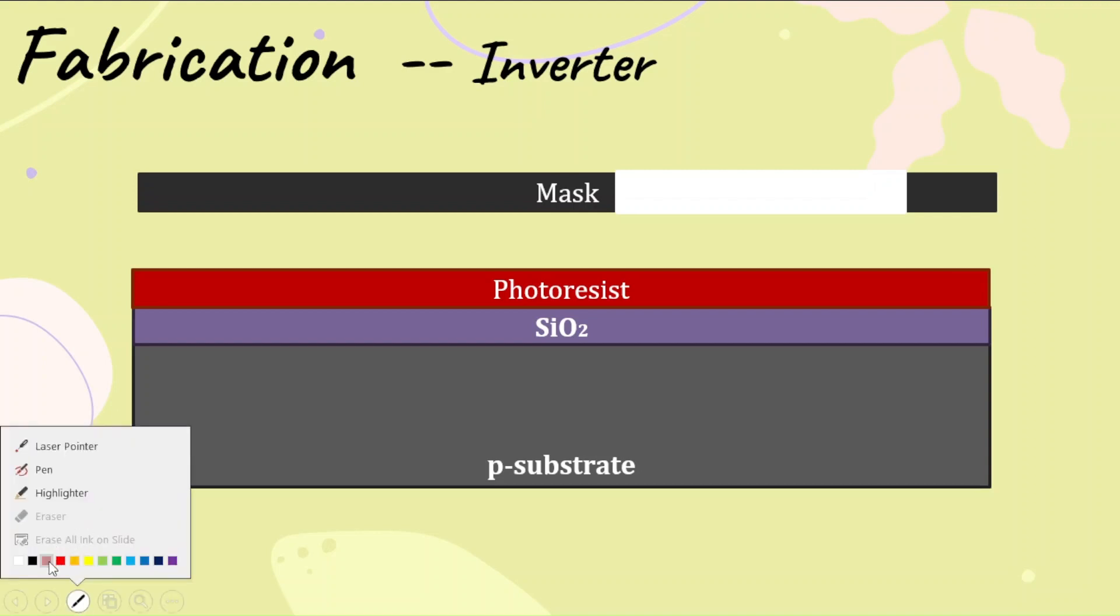For those who don't understand what a mask is, where I have shown this black area, this black area will avoid the penetration of light, whereas the white area allows the light to pass through it.